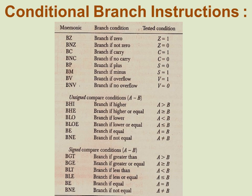Other branch instructions include BV (branch if overflow) and BNV (branch if no overflow). For unsigned compare conditions, when comparing A and B: BGT is branch if higher, BGE is branch if higher or equal, BLE is branch if lower or equal, BE is branch if equal, and BNE is branch if not equal.